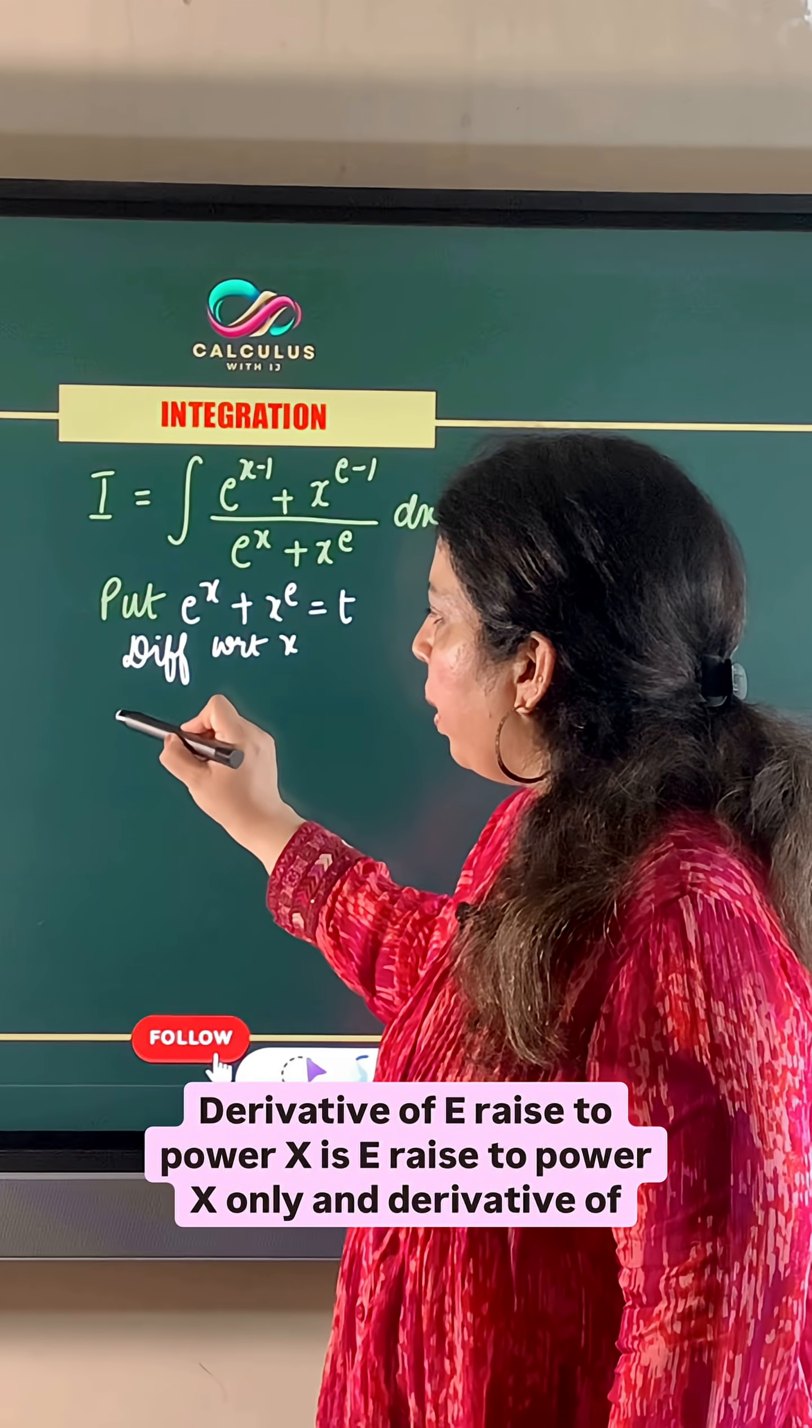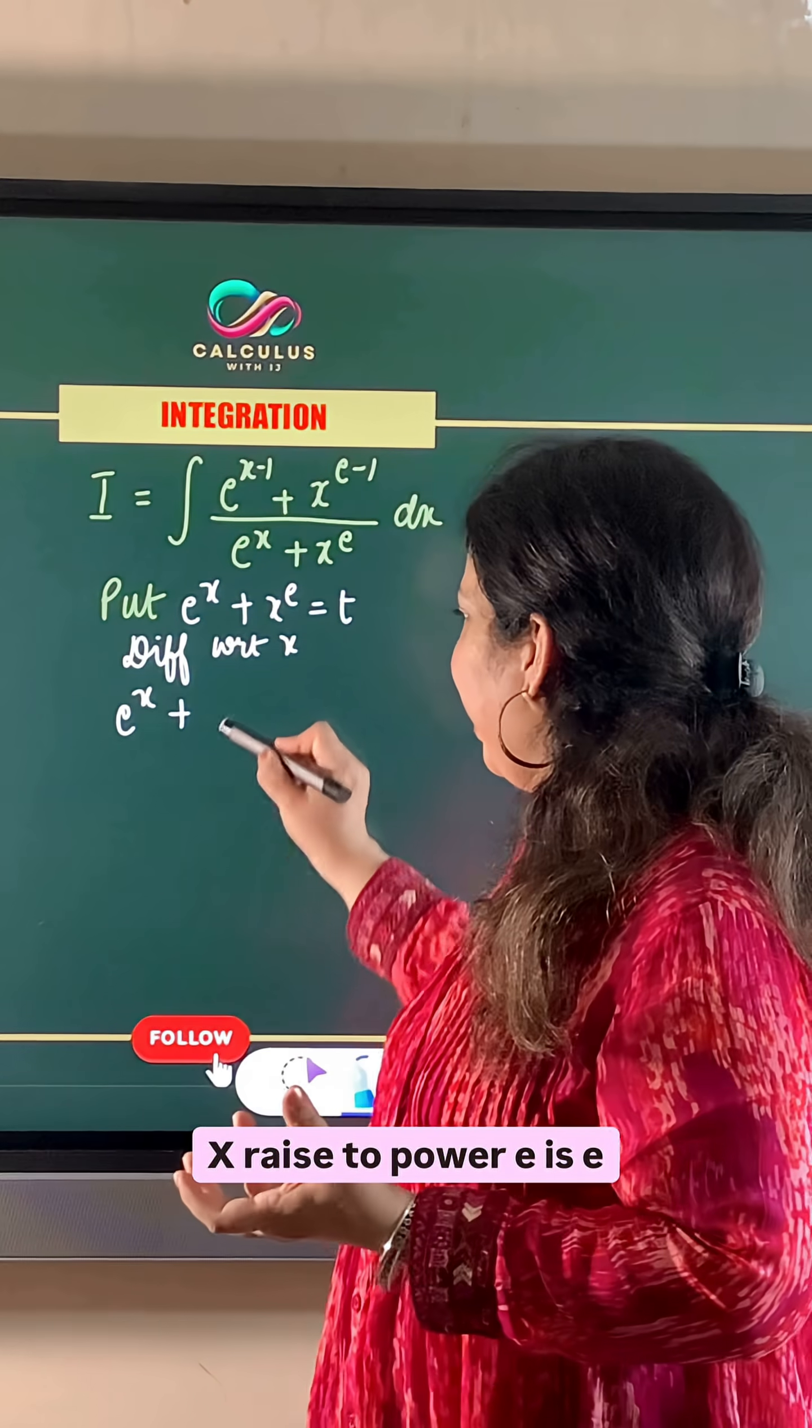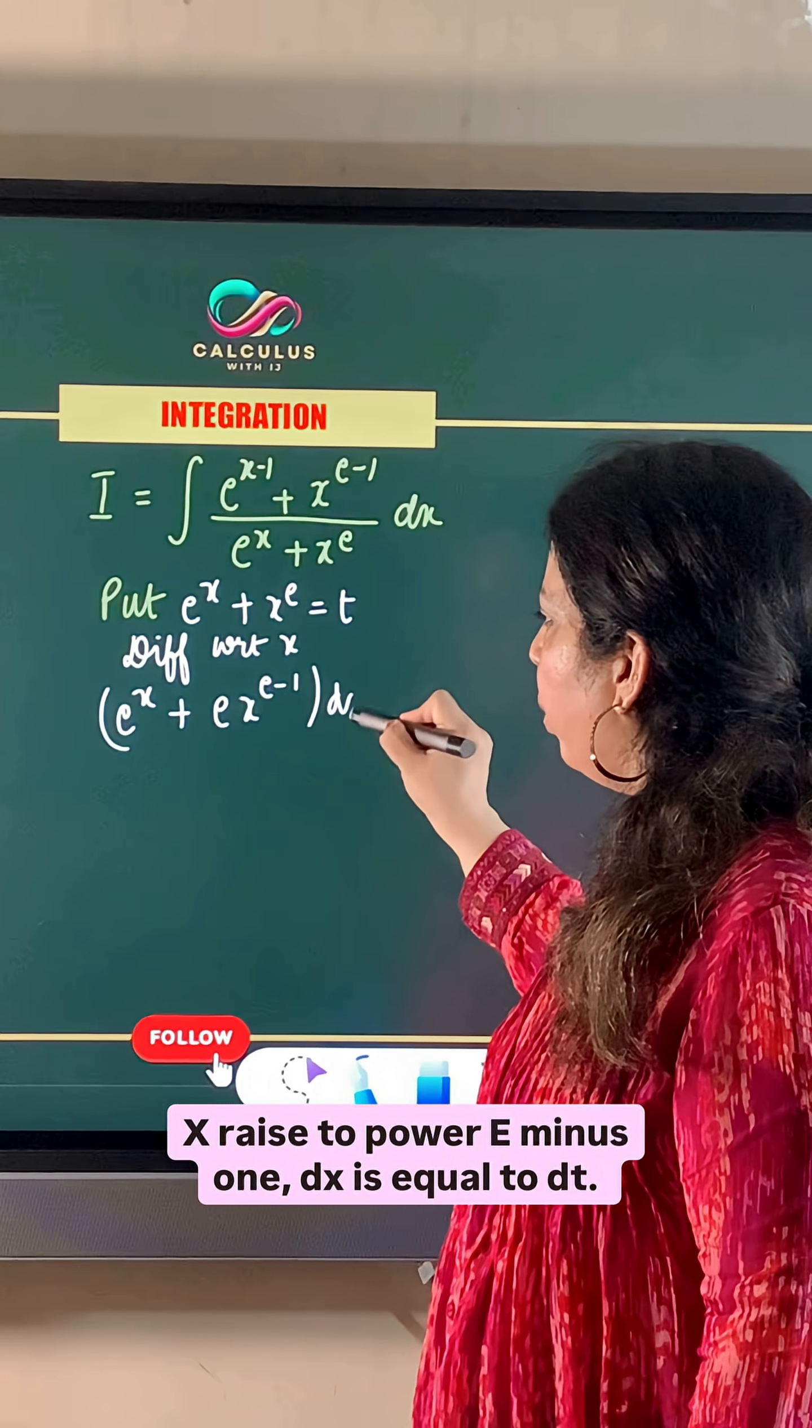Derivative of e raised to power x is e raised to power x only, and derivative of x raised to power e is e times x raised to power e minus 1 dx is equal to dt.